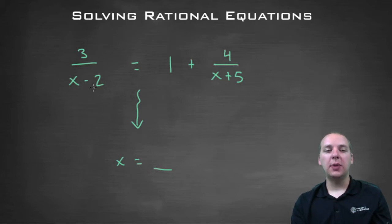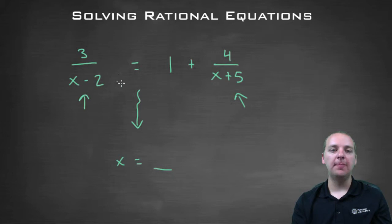But if x was possibly 2 or negative 5, we'd be in trouble. Because you can't plug in 2 here, it would give you division by 0. And you couldn't plug in negative 5 here because it would give you division by 0. So if you do the math and you get an answer like that, that's what's called an extraneous solution, and we have to be on the lookout for those.